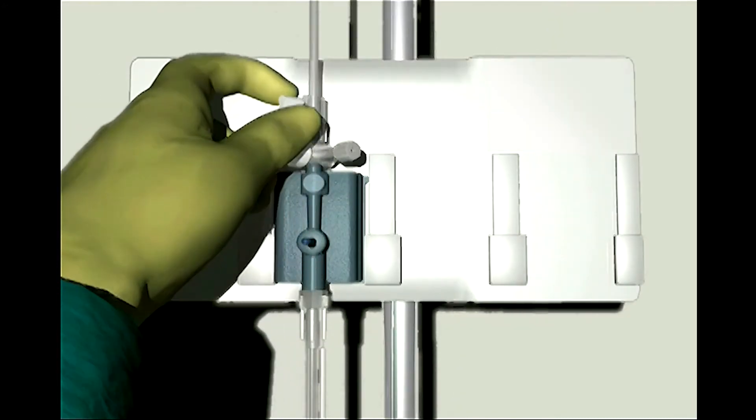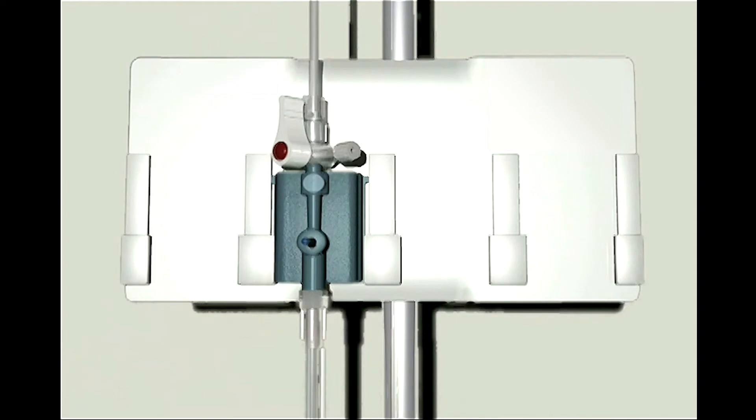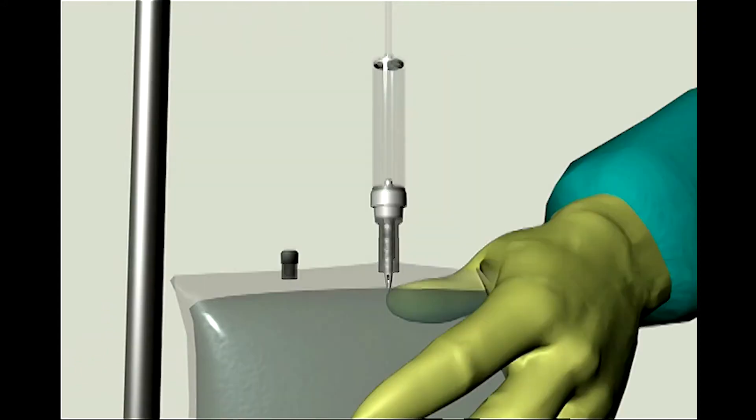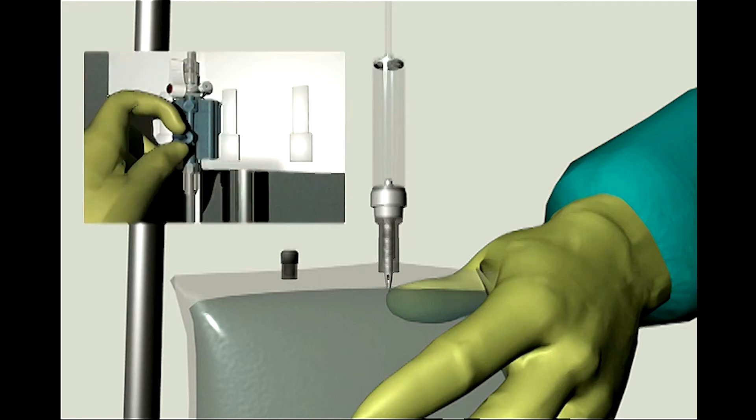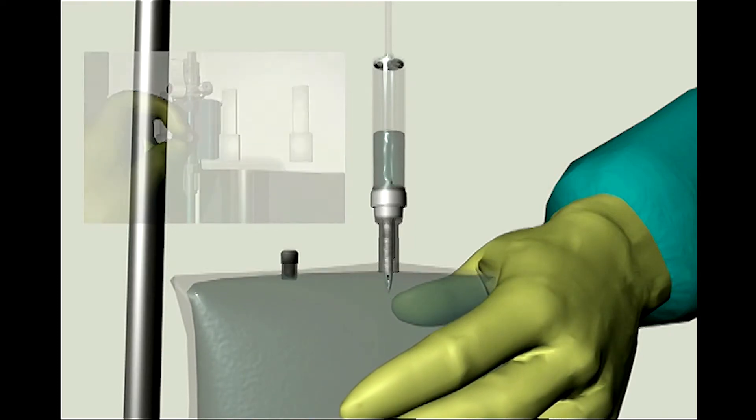Open the vent port by turning the stopcock toward the patient's pressure tubing and away from the transducer while leaving the vented cap in place. While keeping the IV bag inverted, gently squeeze air out of the bag with one hand while pulling the snap-tab flush device with the other hand until air is emptied from the IV bag and the drip chamber is filled at least halfway, per institutional policy.